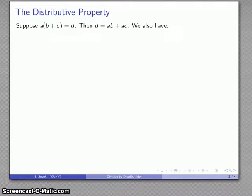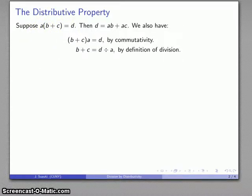My distributive property gives me a relationship between a product and a sum. So here, the product a times quantity b plus c is the same as a times b plus a times c. This gives us a couple of steps. First of all, I can reverse that multiplication: b plus c times a. And then my definition of division says that b plus c is d divided by a.